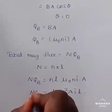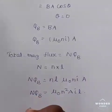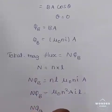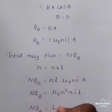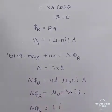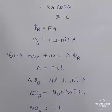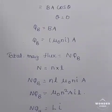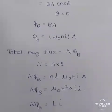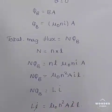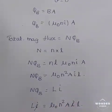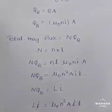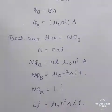We know that total magnetic flux is equal to self-inductance of the coil multiplied by current. Comparing the two equations: L·I = μ₀N²A·I·L. Cancelling I on both sides, therefore L = μ₀N²AL.